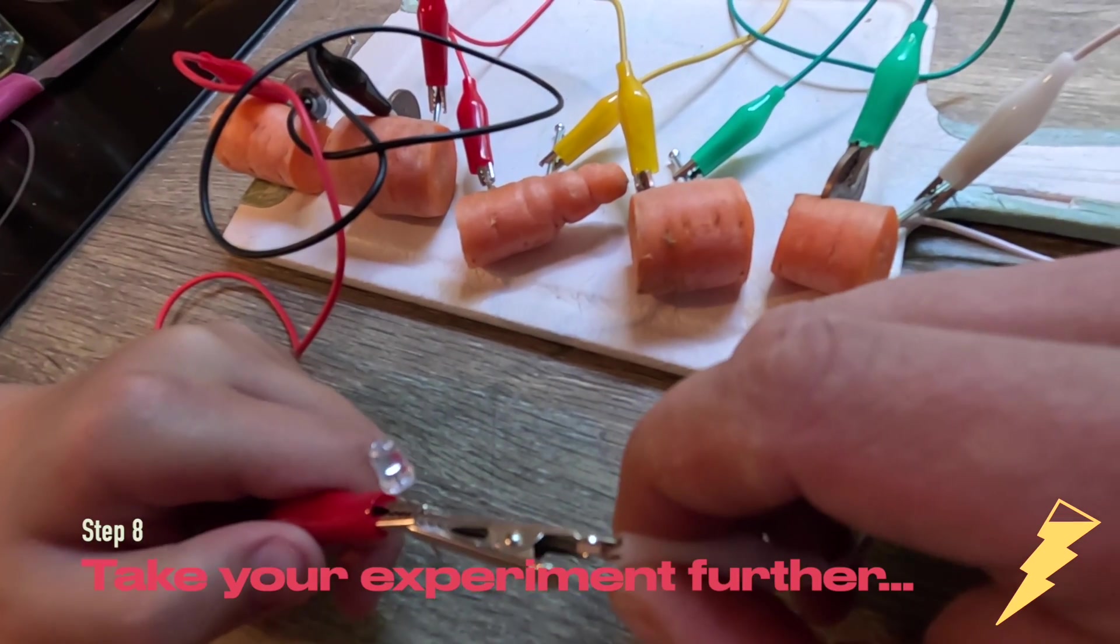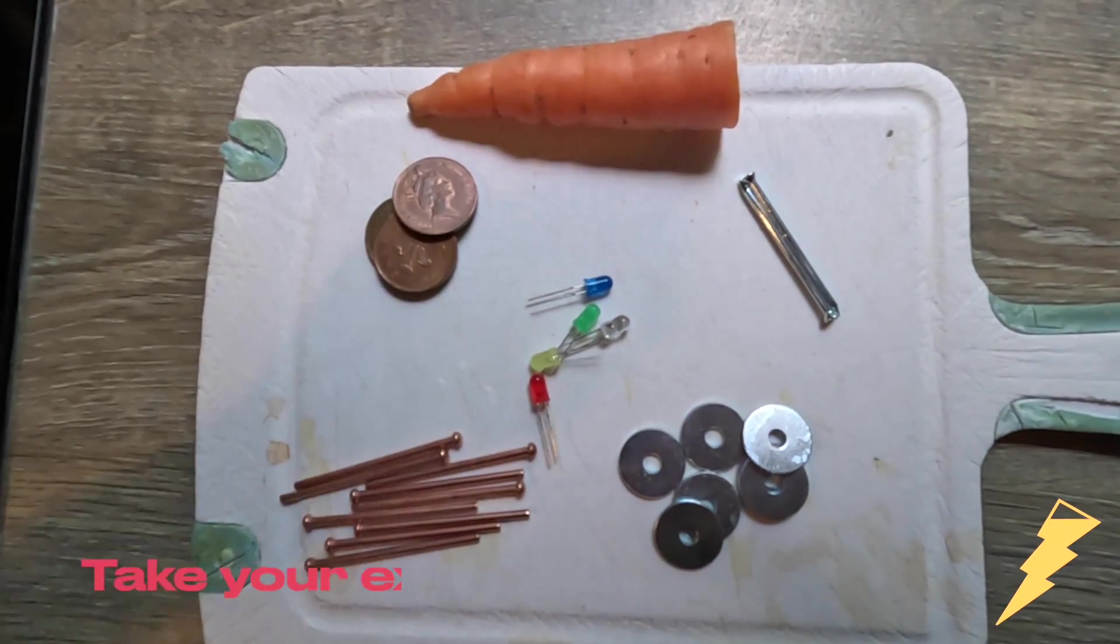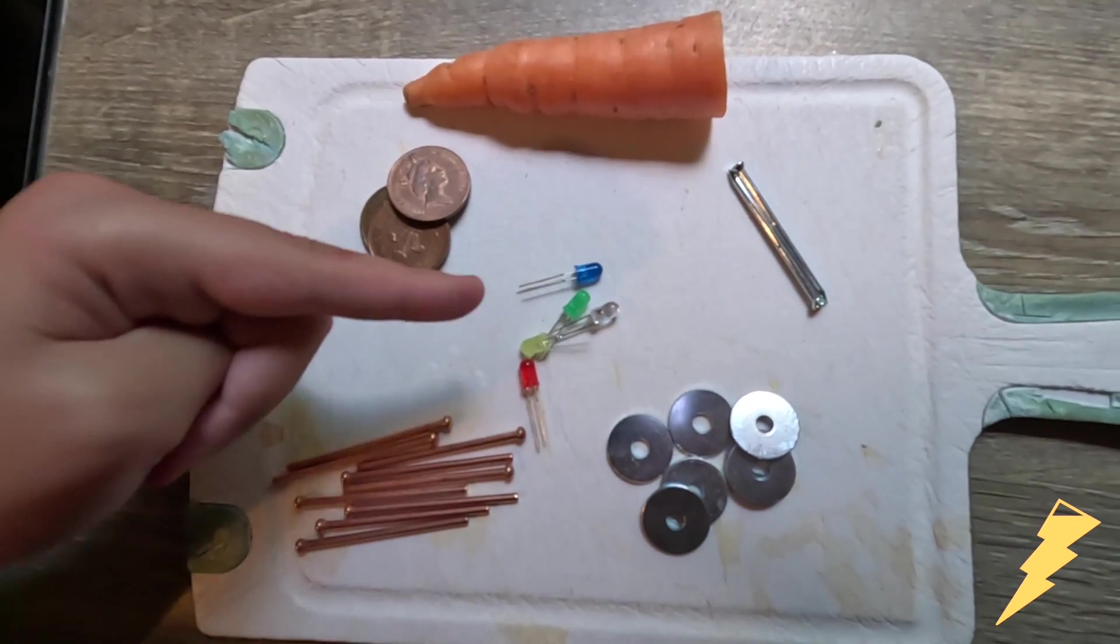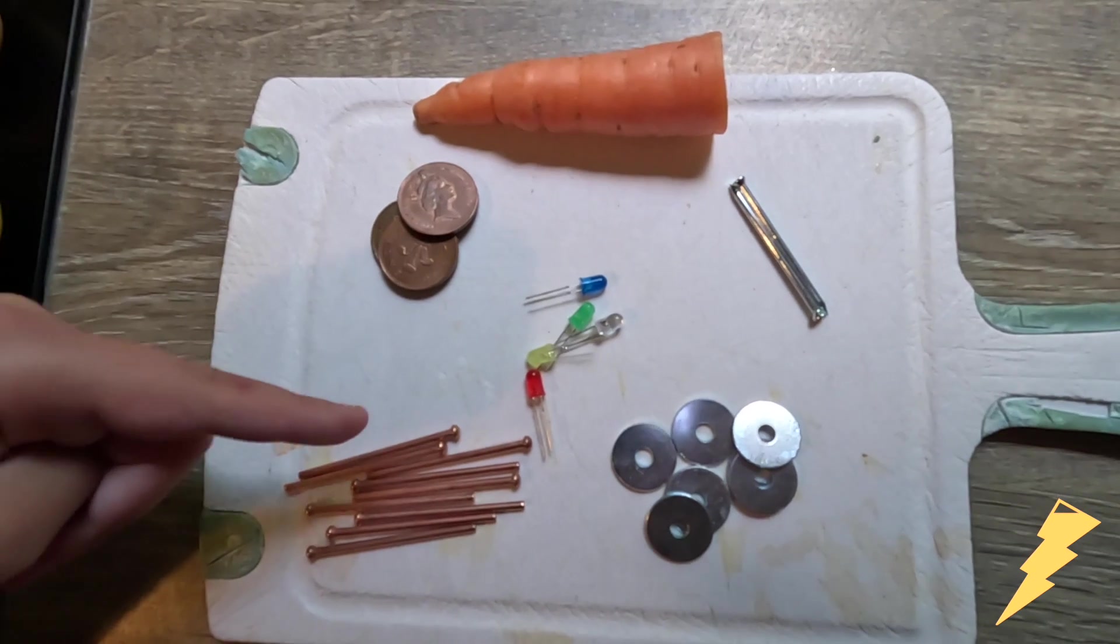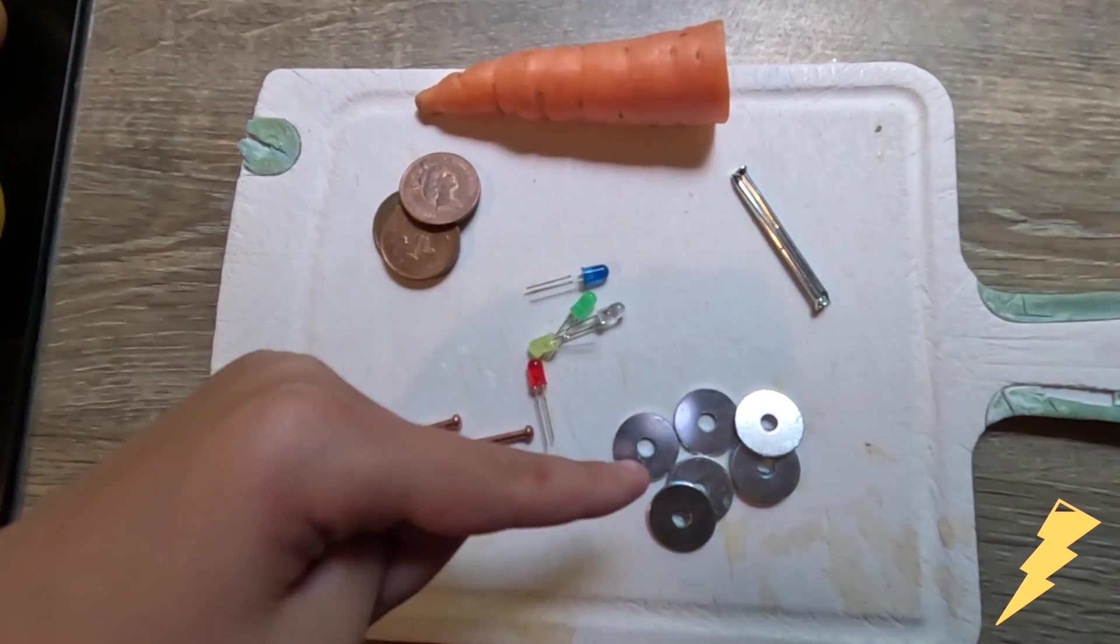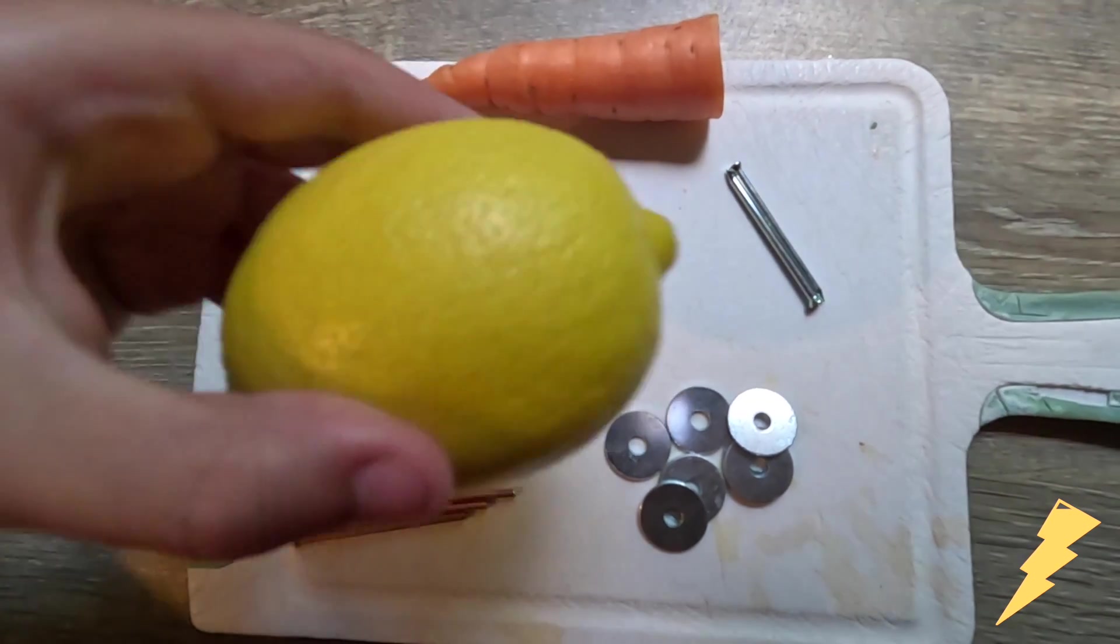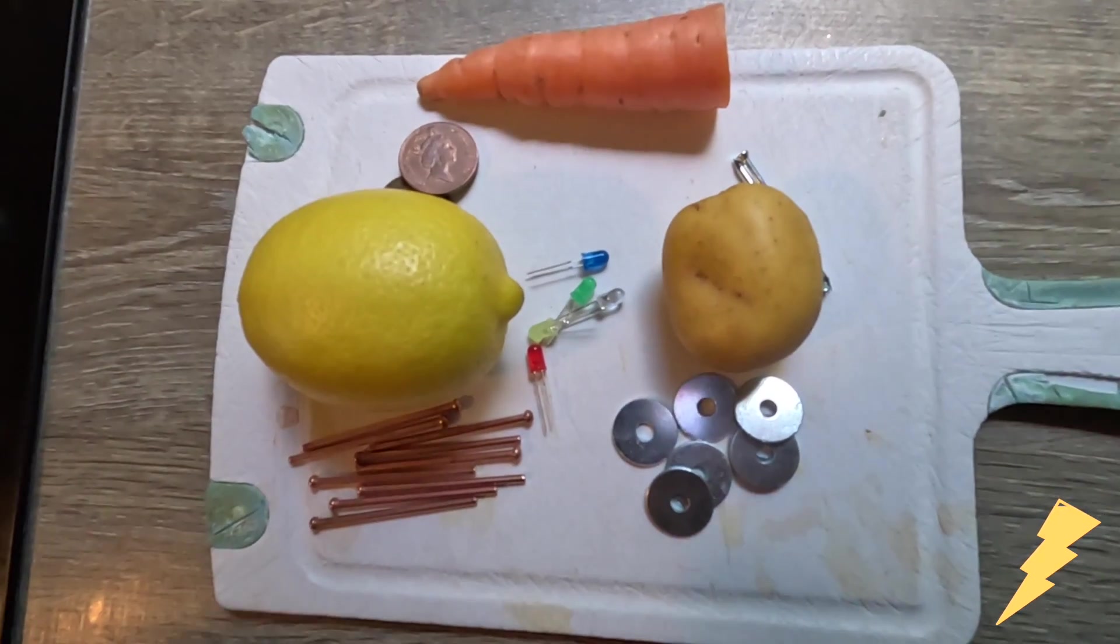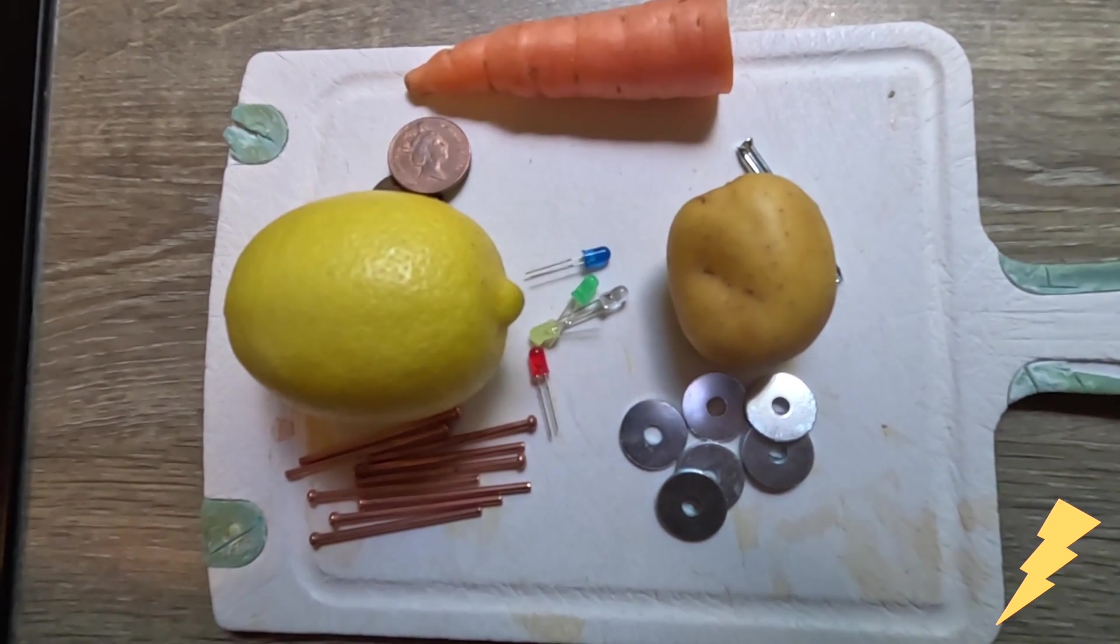In this experiment we made a battery out of a carrot, copper coins, and zinc nails to light an LED, which is a small light bulb. But instead of copper coins you could use copper nails, and instead of zinc nails you could use zinc washers. And instead of the carrot you could use other fruit and veg like lemons or potatoes, or any other fruit and veg that you would like to try and experiment with. Have fun and happy experimenting.